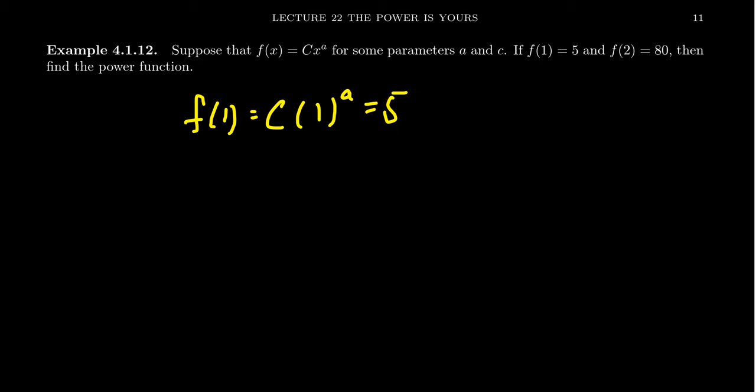This is a great value to have because even though I don't know what a is, 1 to the a is always just going to equal 1. So this would become c times 1 which equals 5. You see very quickly here that c equals 5.